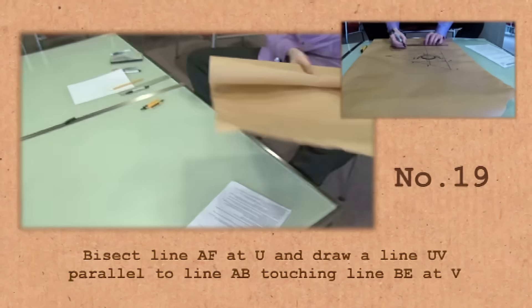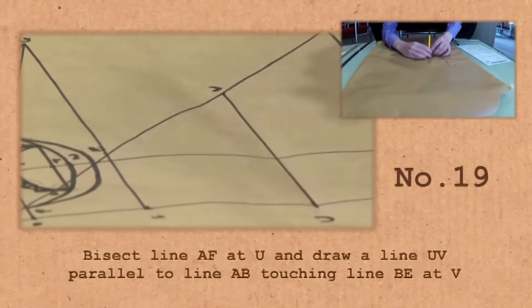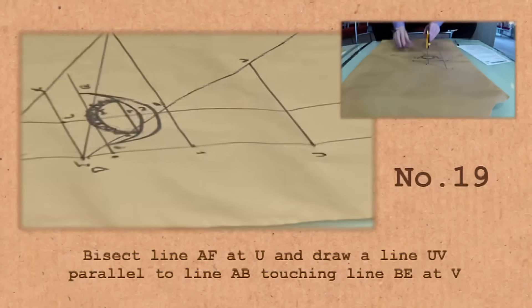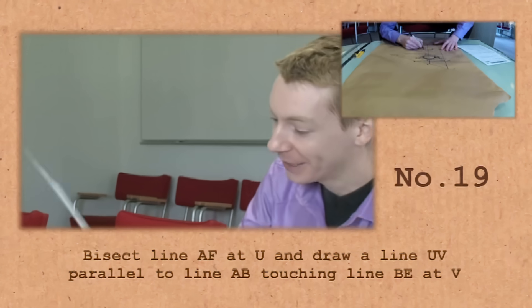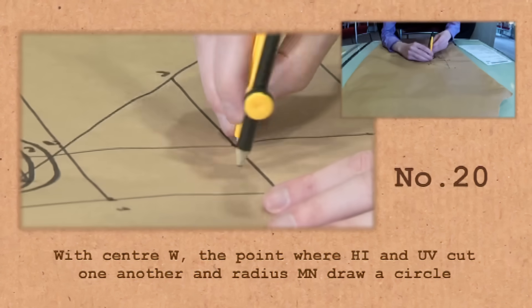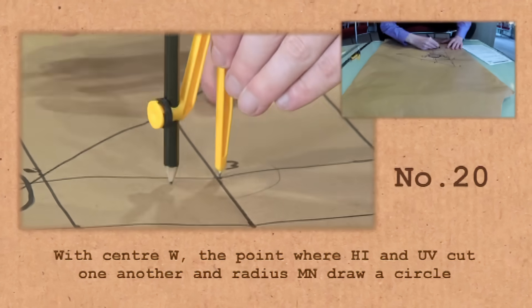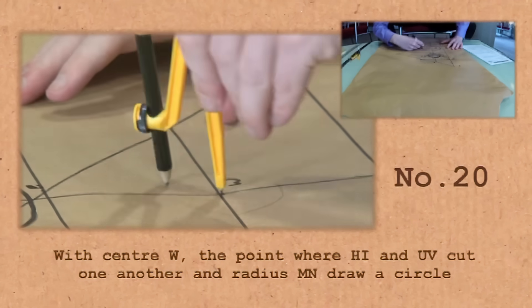Bisect line AF at U, and draw a line UV parallel to line AB, touching line BE at V. I'm going blind. It's all swimming now. OK. With centre W, the point where HI and UV cut one another, and radius MN draw a circle.